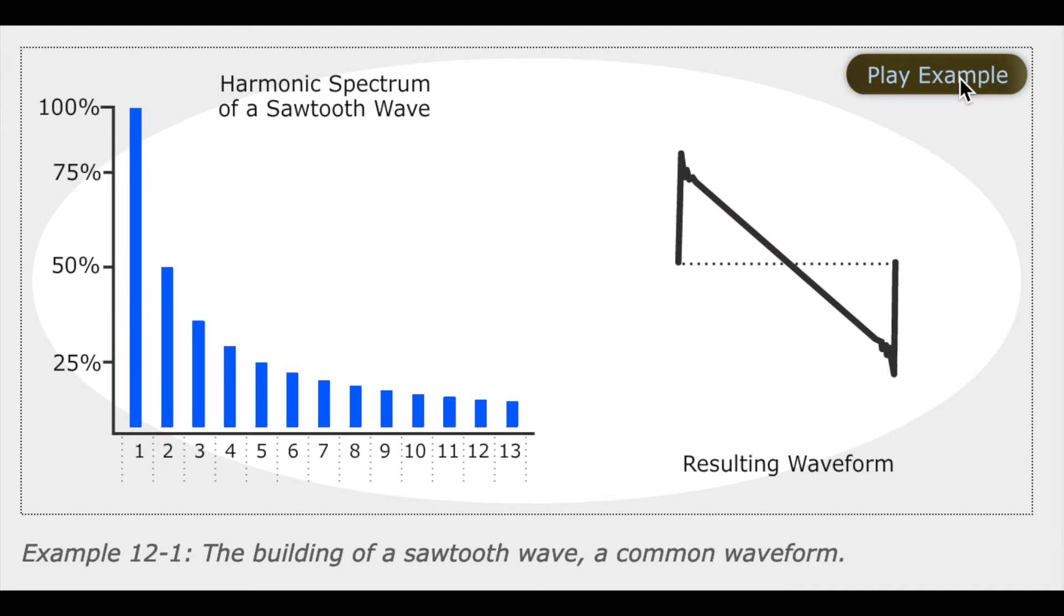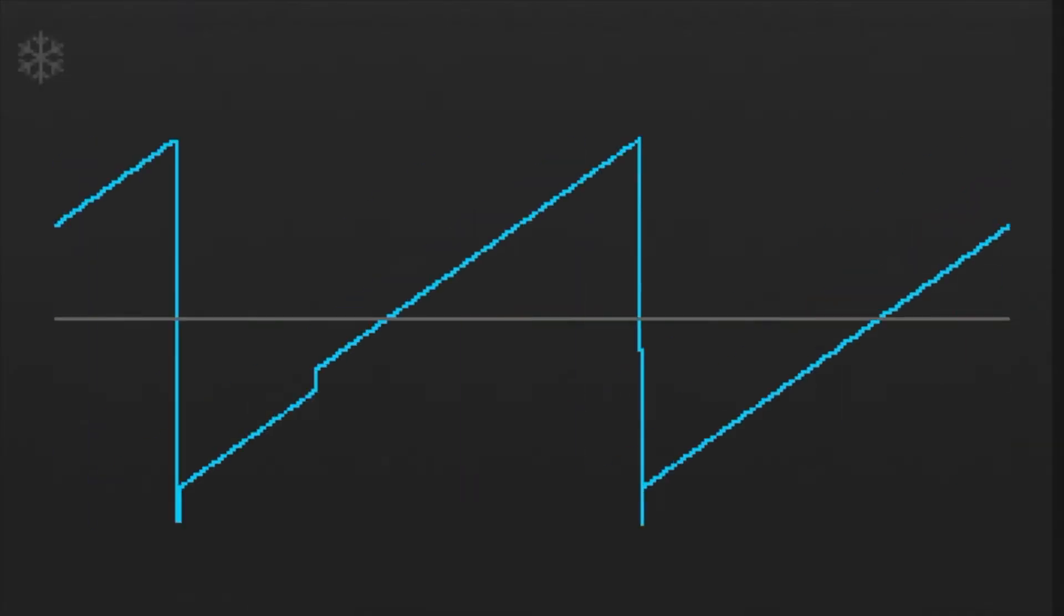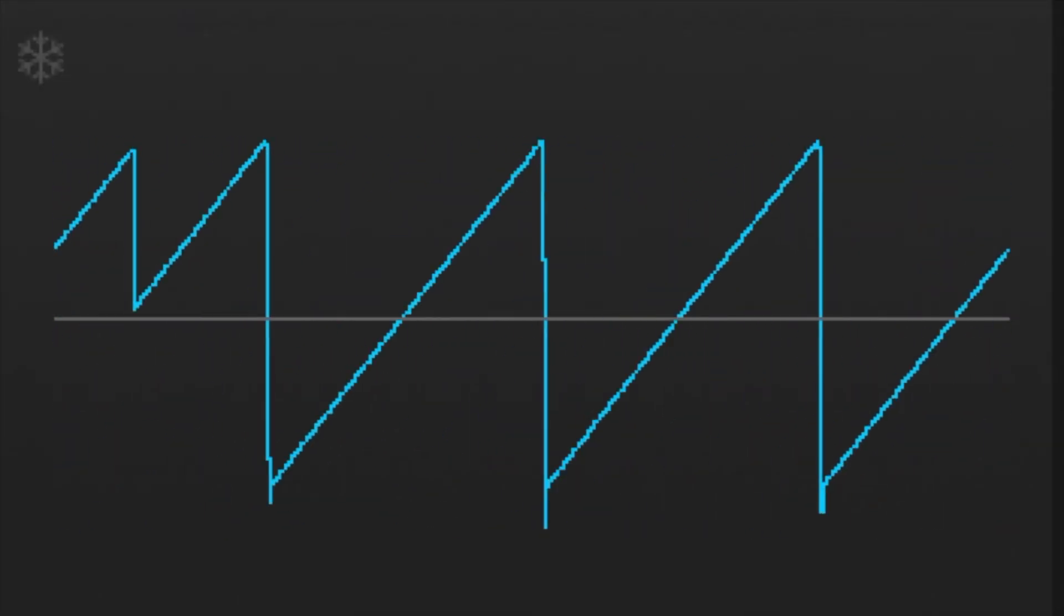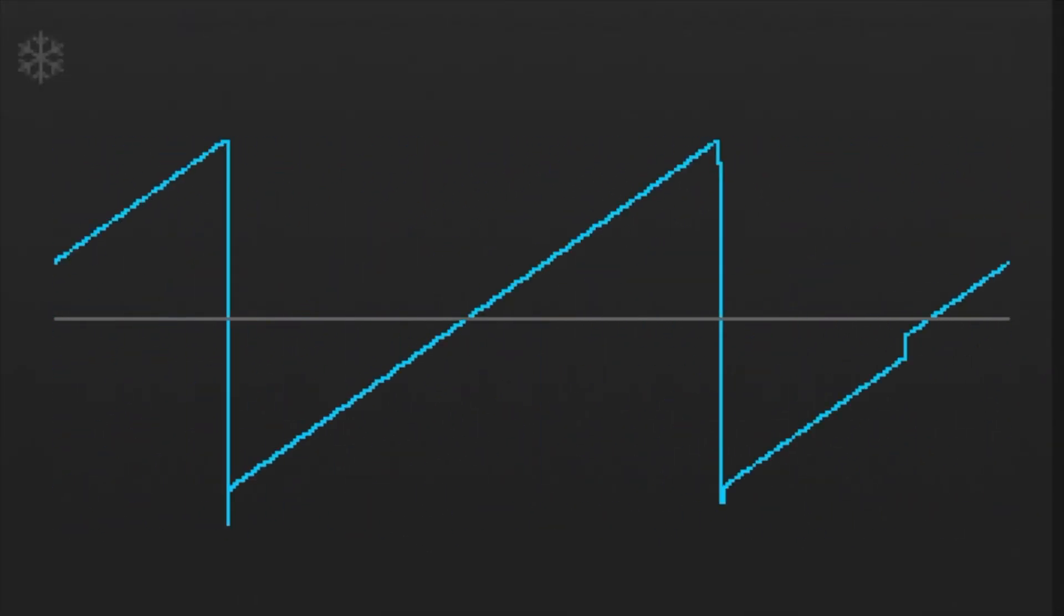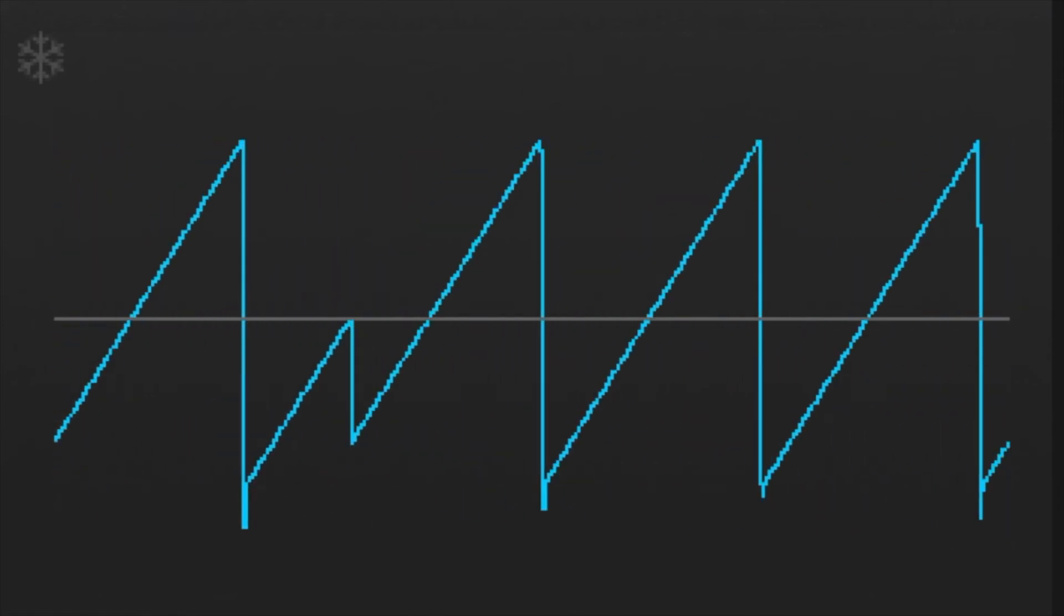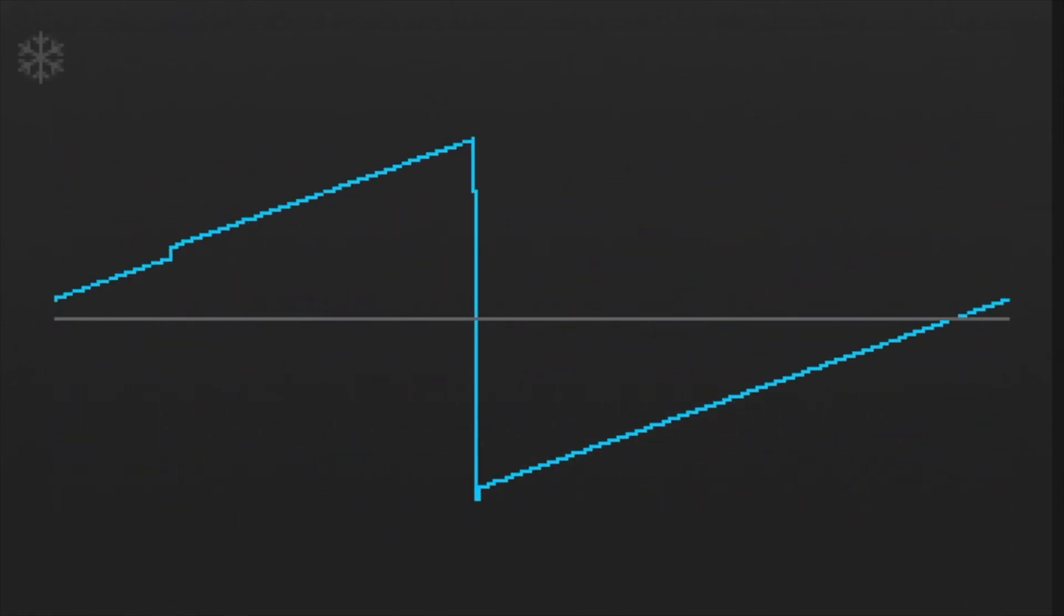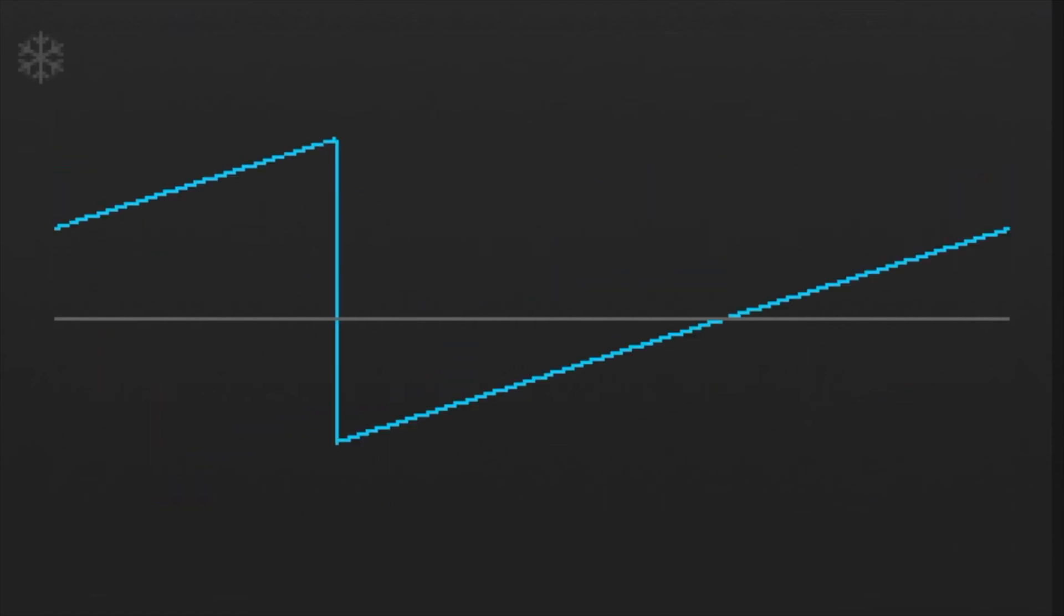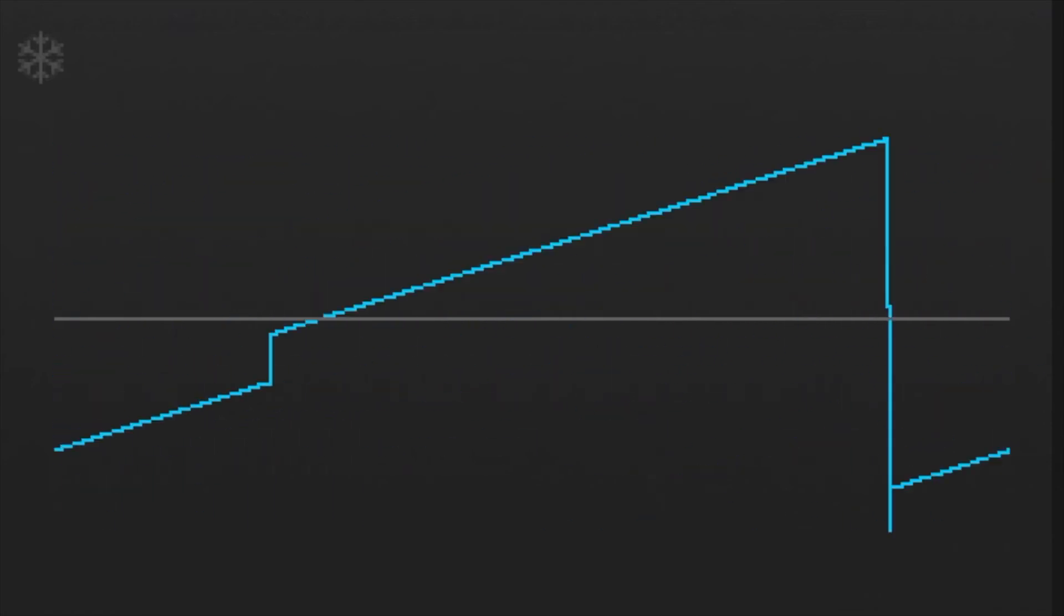The sawtooth wave contains a lot of harmonics. So you can say it has a kind of buzzy sound. And in synthesis, it's a really nice sound to start with if you're planning on doing a lot of filtering, because it has all of those harmonics that you can filter out in interesting ways.